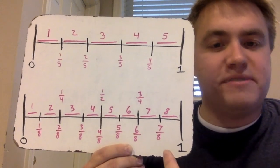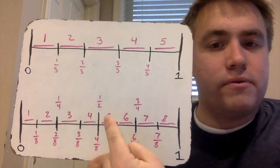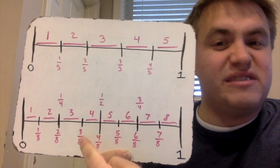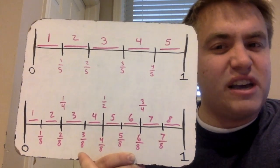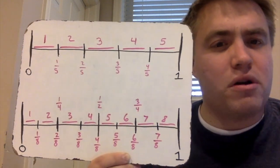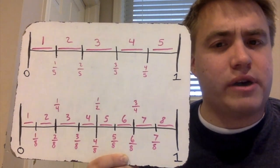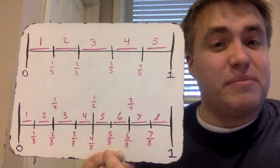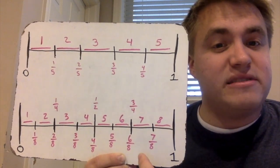I also added a couple other fractions up here: one-fourth, one-half, and three-fourths. One-fourth is also the same thing as two-eighths, so just because you have two-eighths, you need to understand that two-eighths is the same thing as one-fourth. We're going to talk about that more in a later lesson, so if it doesn't make sense yet, that's okay. One-half is also the same thing as four-eighths, and three-fourths is the same thing as six-eighths.